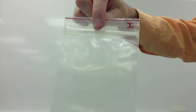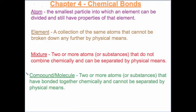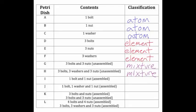In bag I, we have a bolt and a nut that are in the same bag, and they are assembled — they are hooked together. This is a compound, or a molecule. The atoms have bonded; they're connected together. So on our data table, under I, we put molecule, or compound.